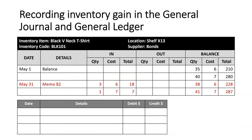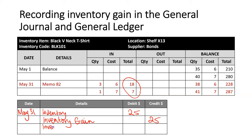Over in the general journal, May 31st: this time my inventory is increasing, so it's debited by the total gain of $25. I also have the revenue account Inventory Gain, which is increasing by $25. My narration will say something along the lines of: inventory count revealed gain of four white crew neck t-shirts — Memo 82.